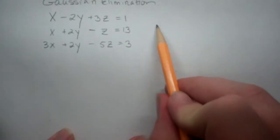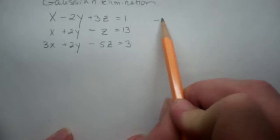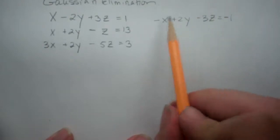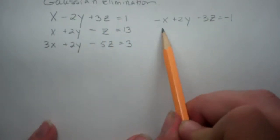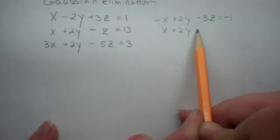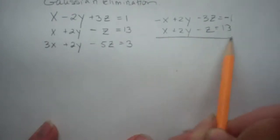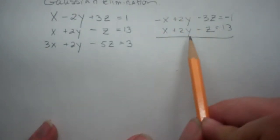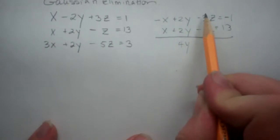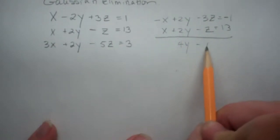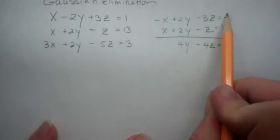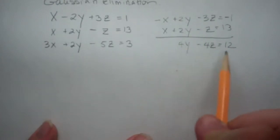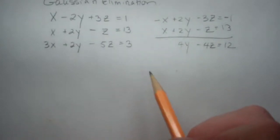I'm going to do that work over here on the side. When we multiply the top equation by negative 1, we get negative x plus 2y minus 3z is equal to negative 1, which we add to the second equation: x plus 2y minus z is equal to 13. When we add these together, negative x plus x is 0, so that's gone. 2y plus 2y is 4y. Negative 3z plus negative z is negative 4z, equal to negative 1 plus 13, which is 12.